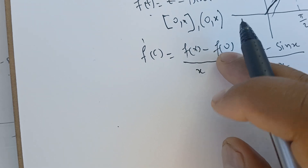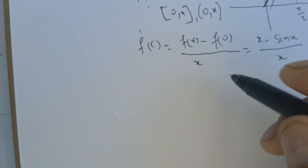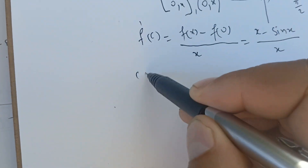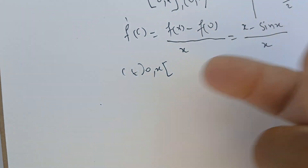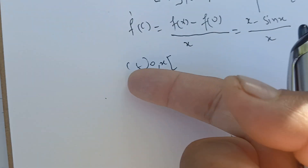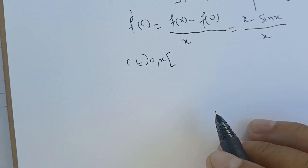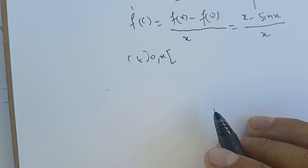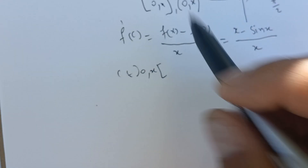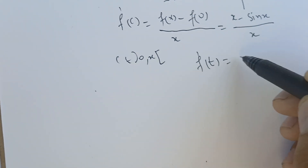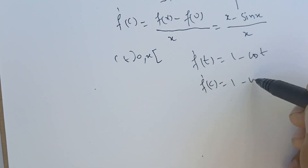This gives us (x minus sine(x)) over x, since f(0) = 0. The key idea is to use the fact that C is in the interval (0, x) and restrict the values C can take through this function to see what we get. The derivative of f is f'(t) = 1 minus cosine(t), therefore f'(C) = 1 minus cosine(C).